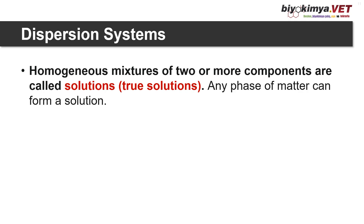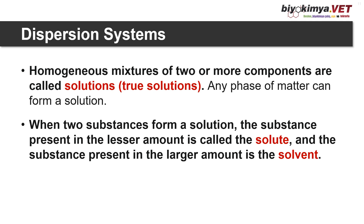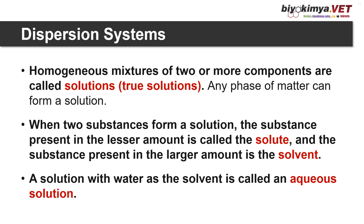Homogeneous mixtures of two or more components are called true solutions. Any phase of matter can form a solution. The substance present in the lesser amount is called the solute — the discontinuous phase — and the substance present in the larger amount is the solvent. The solution with water as the solvent is called an aqueous solution. There can be more than one solute in a solvent.